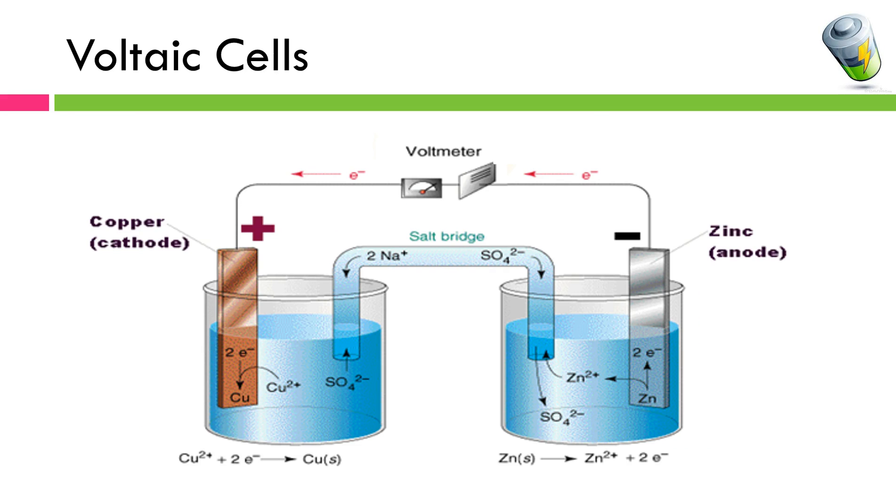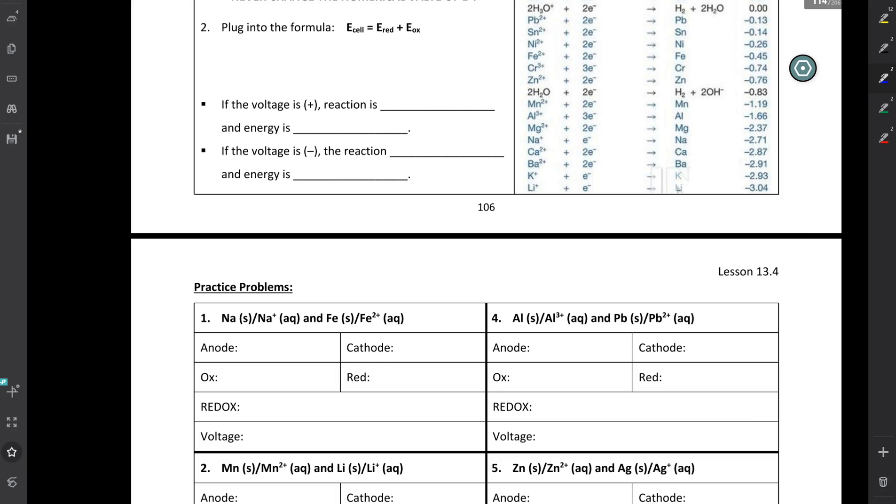So if we're going to finish up our voltaic cell diagram, I can include the amount of energy produced by the reduction and oxidation half-reactions, and over by the voltmeter I can include the total voltage of the cell. All right, let's try our practice problem. All right, so I'm back in the workbook, and I'm going to take a look at question number one.